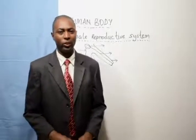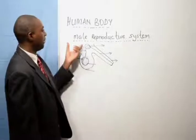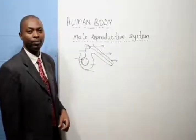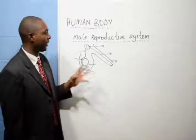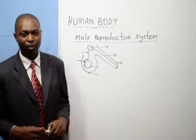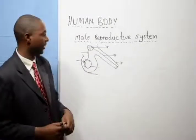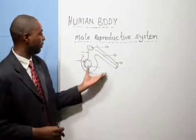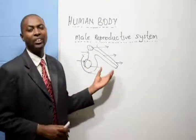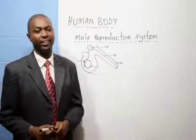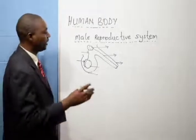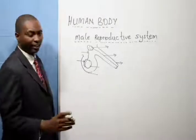I wish to take you through the male reproductive system. We covered that a system is a combination of several organs performing a common task. This is the main organ involved in reproduction, giving rise to a new offspring. In the male reproductive system, we start by naming the parts.